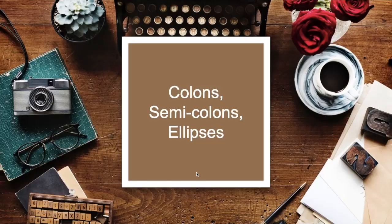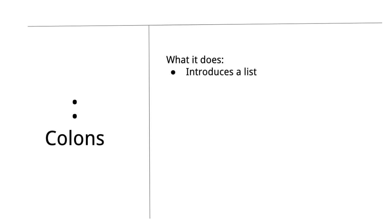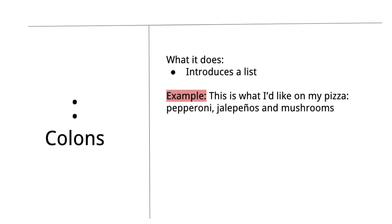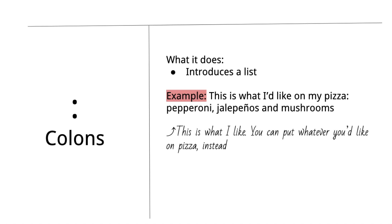The first thing we're going to be talking about is colons. Here's what colons do: they introduce a list. Like, this is what I want on my pizza — pepperoni, extra cheese, jalapeños, and mushrooms. You don't have to copy this exactly the way I wrote it. You can put what you like on pizza. The list doesn't matter. All it does is introduce the reader to the fact that a list is coming.